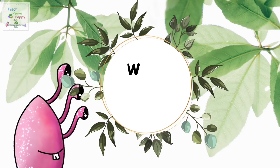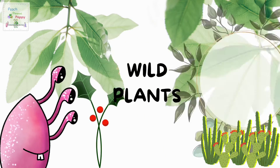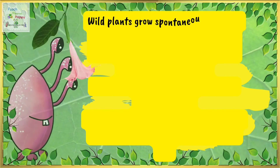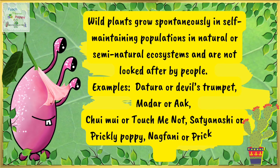Then we have the wild plants. Wild plants grow spontaneously in self-maintaining populations in natural or semi-natural ecosystems and are not looked after by people. For example, datura or devil's trumpet, madar or aak, chui-mui or touch me not, shottanashi or prickly poppy, nakfani or prickly pear, etc.